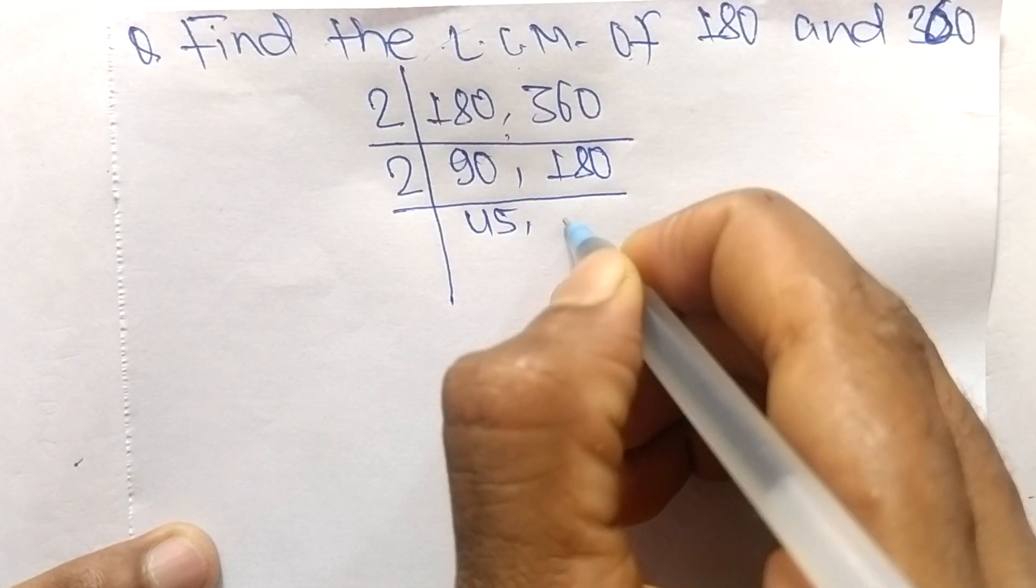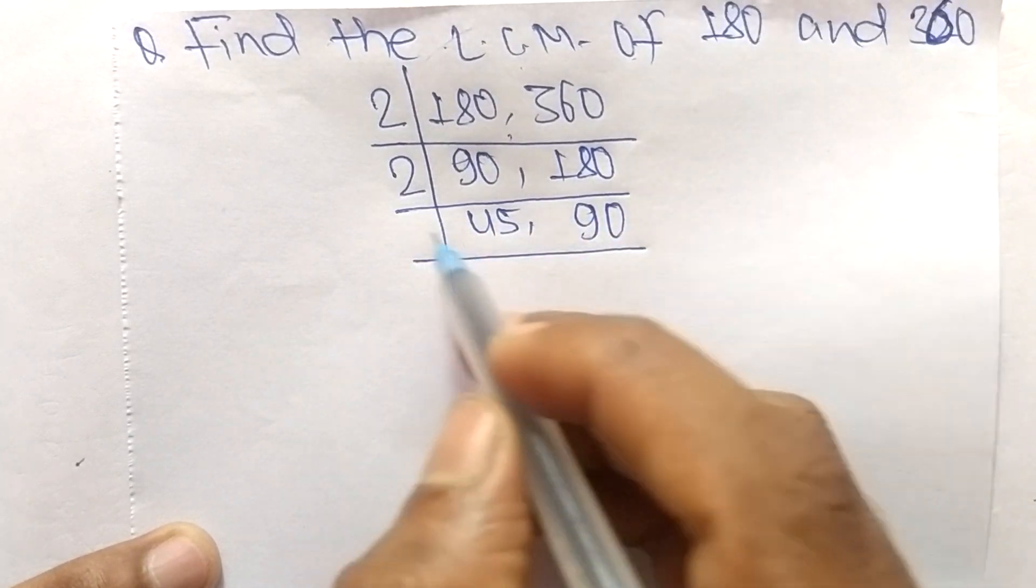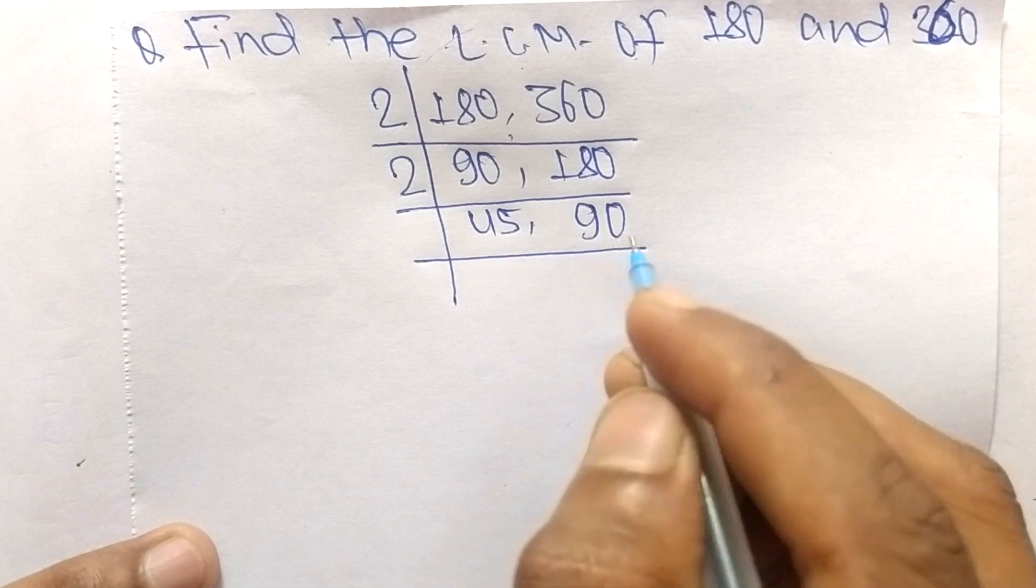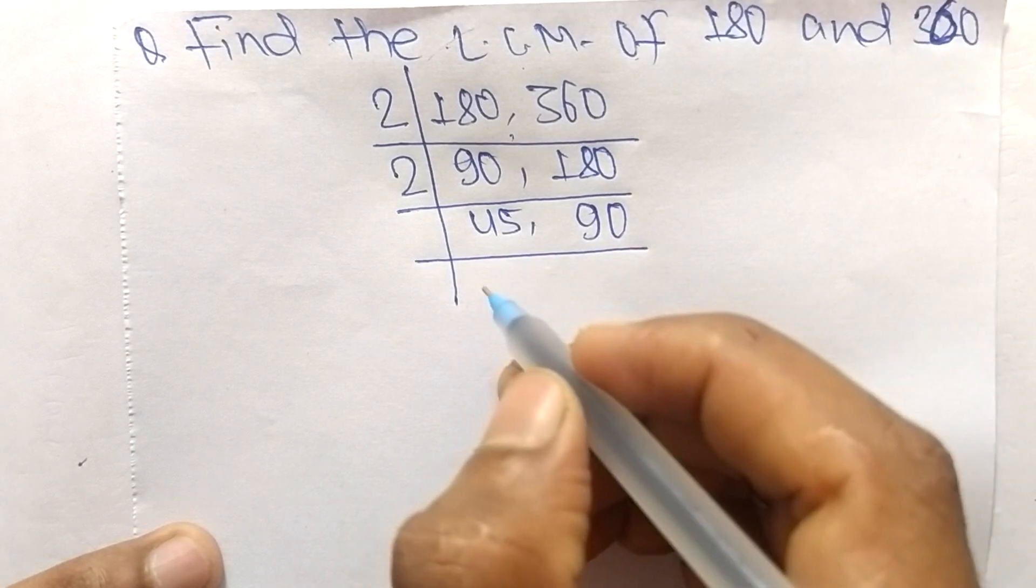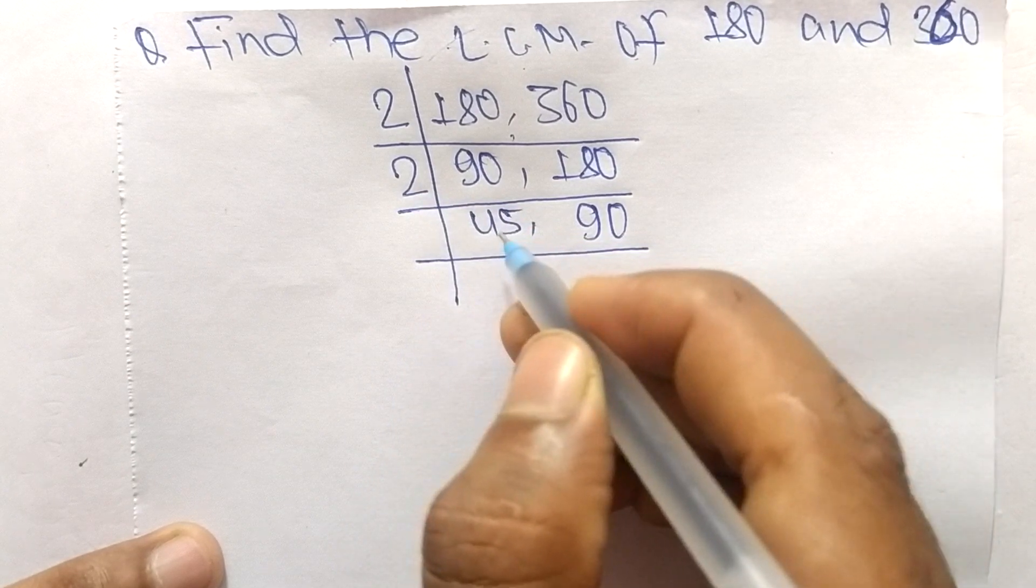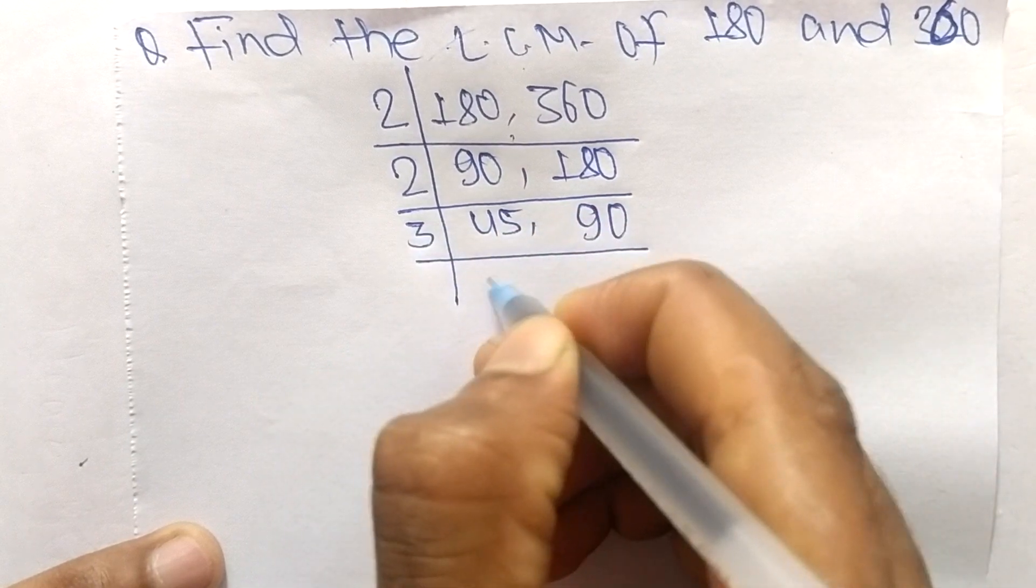Now 2 can't exactly divide 45 and 90 both, so we choose the number greater than 2 that can exactly divide 45 and 90. So the number is 3.